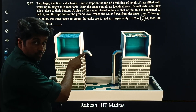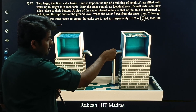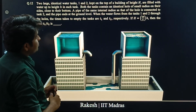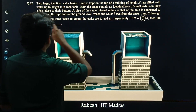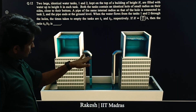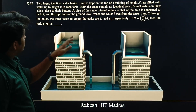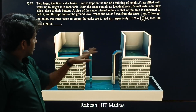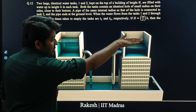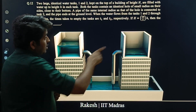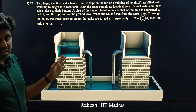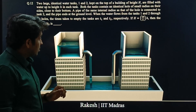Tank 1 just has an opening at its base. Tank 2 has a long pipe connected such that it ends at the ground. When water flows from tanks 1 and 2 through the holes, the times taken to empty the tanks are t1 and t2. What is the ratio t1 by t2?